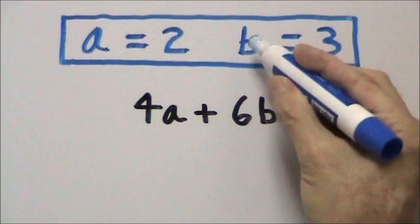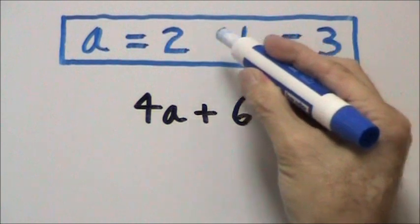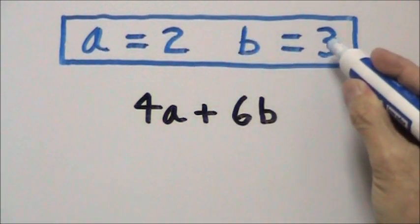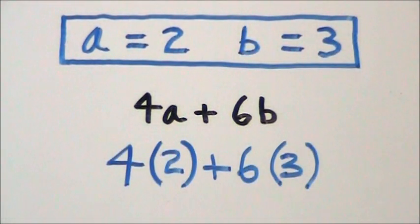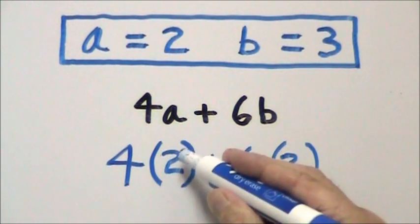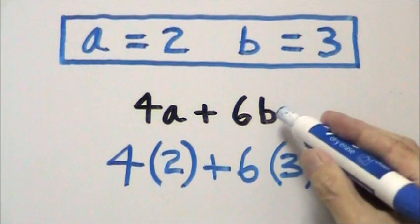So whenever we see these variables, we replace them with the numbers that they represent. So we rewrite the problem and substitute 2 for a and 3 for b.